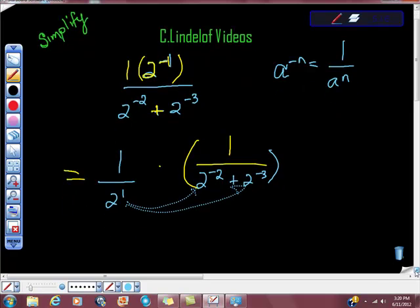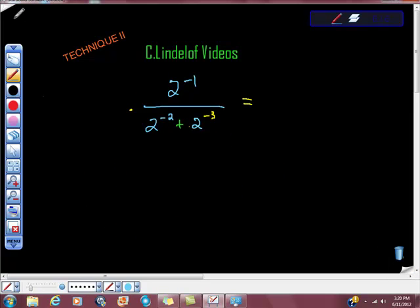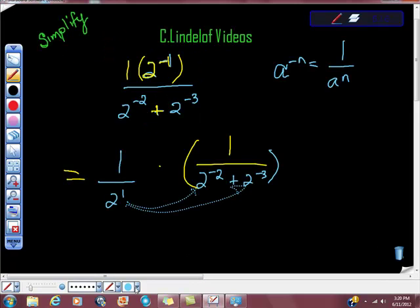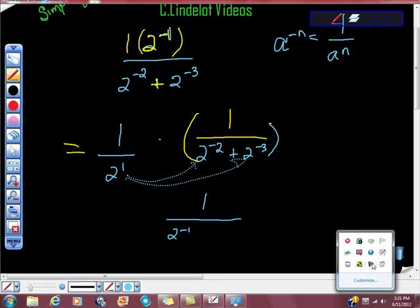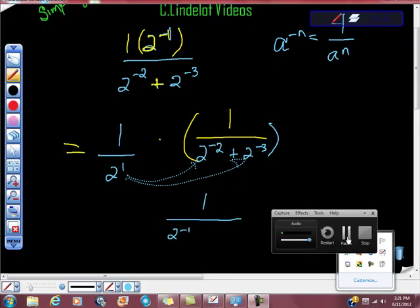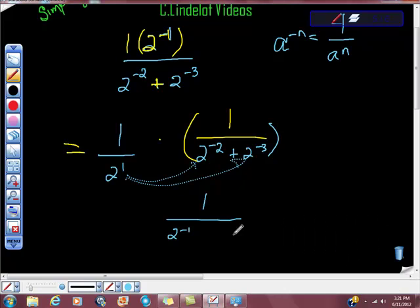So what does that look like? Well, that looks like this, right? This one times this one is one. Two to the first times two to the negative one is two to the negative one. All right. So now we have this times this, which is plus two to the negative two.